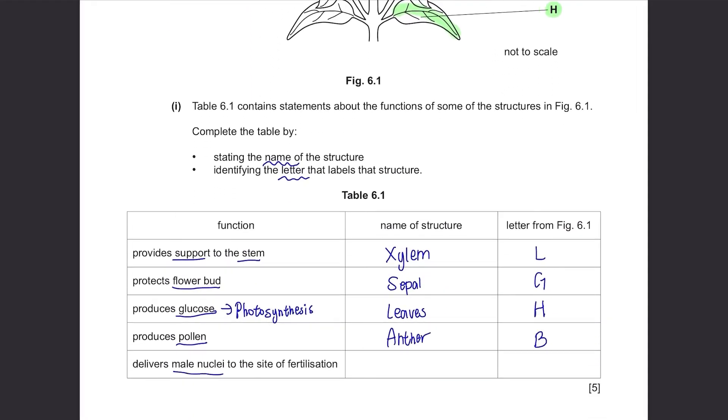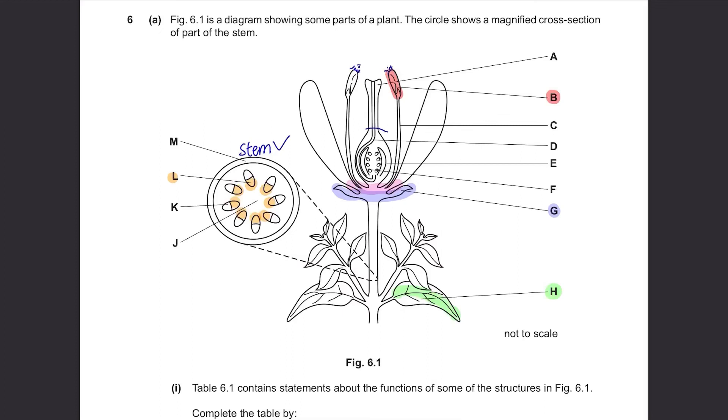The male nuclei to the site of fertilisation. Male nuclei is within the pollen and this is the site of fertilisation so to bring it down here. It needs to be transported through this, the pollen tube, D.